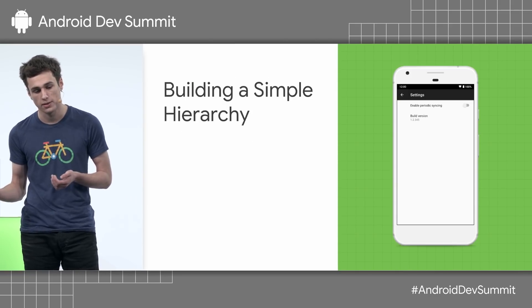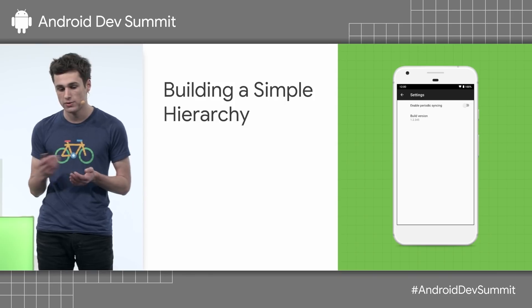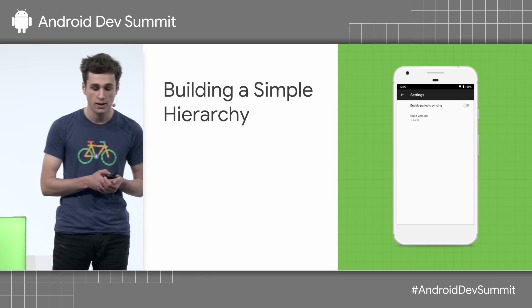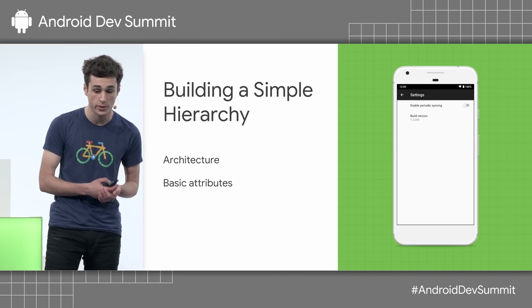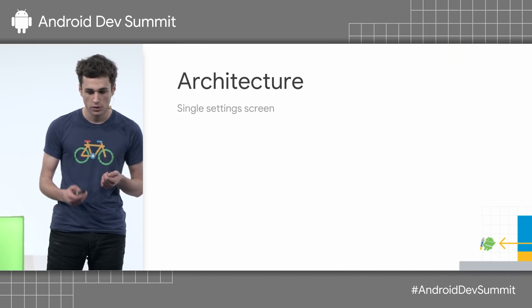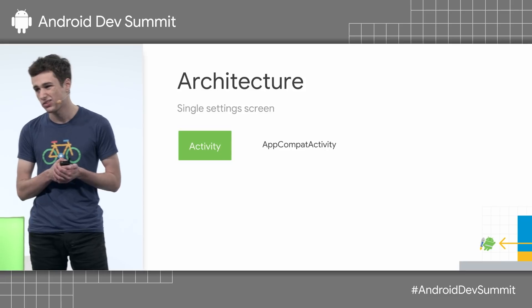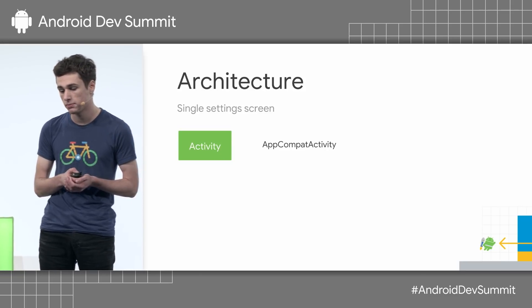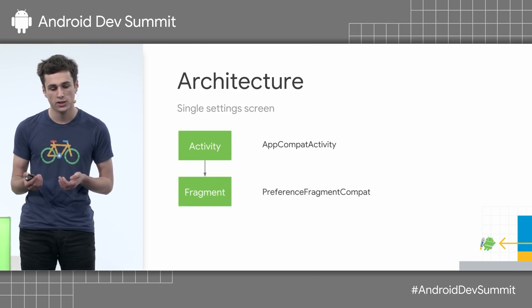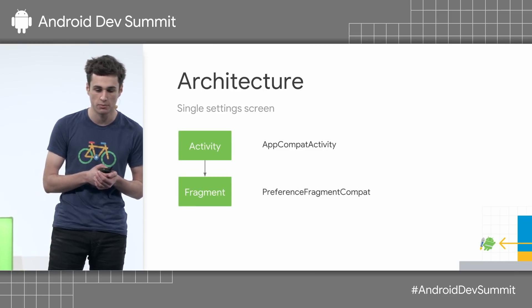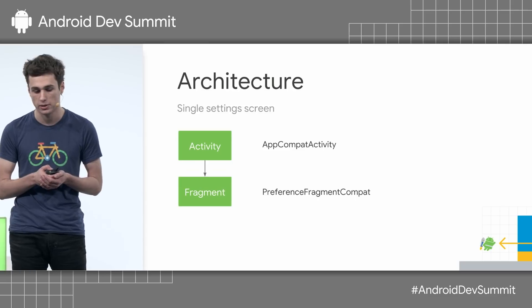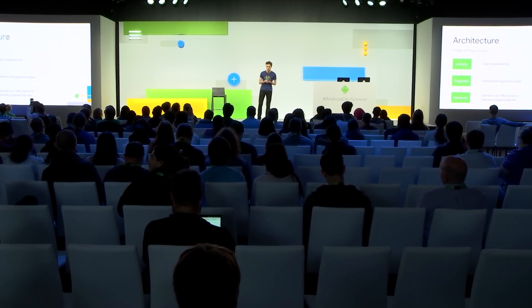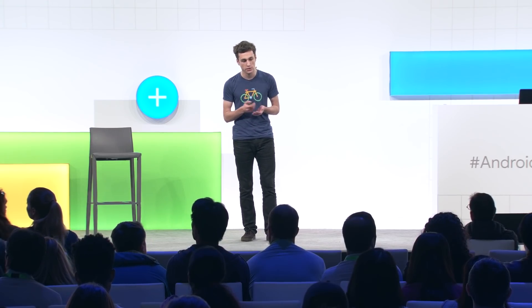So let's start building our settings screen. We're going to start off by building a simple hierarchy. We have a preference with a switch that allows the user to toggle state and a preference that just displays text. I'm going to cover how you should structure your architecture and also some basic attributes you should be aware of when you're using the preference library. We're going to start at the top with a simple activity that just acts as a container for our hierarchy. This should be an AppCompat activity with an AppCompat-based theme. The activity itself is basically just a container for this PreferenceFragmentCompat, which is the main entry point when using the preference library. All our interesting preferences and configuration will happen in here. And this fragment itself just wraps a hierarchy of individual preferences, which can either be defined in an XML resource or defined programmatically at runtime. In this talk, we're going to focus on XML.